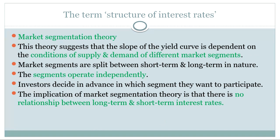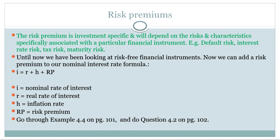Market segmentation theory basically says that the market supply and demand is segmented into long-term and short-term interest rates. You get short-term borrowers in the marketplace who only want to borrow money short-term, and then you get long-term borrowers who are different. So they segment the market into short- and long-term borrowers, and these segments operate independently. You will usually get at least one theory question on these different theories explaining the structure of interest rates.